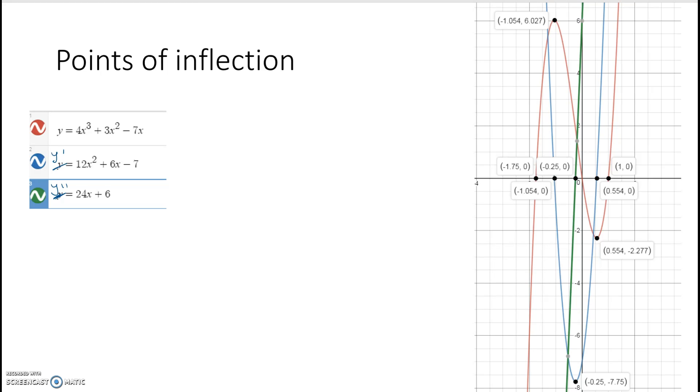Now, let's have a look. The original function has roots at, and you can just read these off from the graph, x equals negative 1.7501, and that's where y is equal to 0, and it has a maximum at x equals negative 1.054.